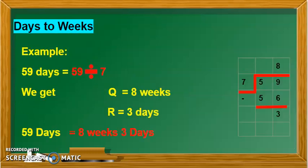Let us see an example. 59 days is how many weeks and days? So we will divide 59 by seven. Seven outside and 59 inside. Seven eights are 56, subtract, and the remainder is three.